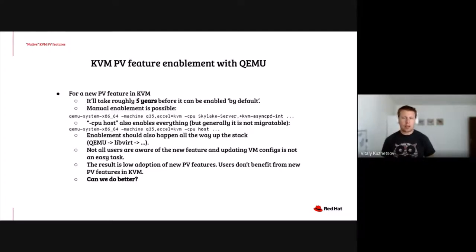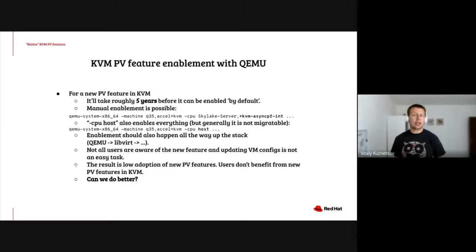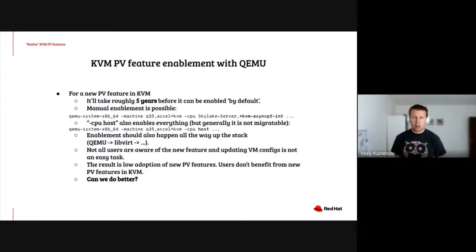What do you do in the meantime? You can always enable the feature manually with a corresponding CPU flag. You can also use the so-called '-cpu host' model, which will enable everything supported by the host, though this mode is not migratable in the general case. If you are running a layered stack, you should wait until all your layers support the feature before you can enable it, and this may take some time. Also, it will require updating all your VM configs to include this new feature, which is no easy task.